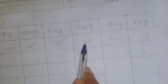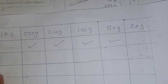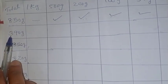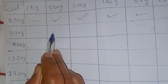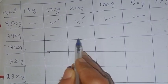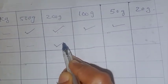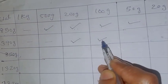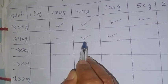500 plus 200, 700. 700 plus 100, 800. 800 plus 50, 850. Then next one is 350. Then next one is 390. There is no kilogram. There is no 500 gram. Then we can take 200. Then 100. Now it make 300.